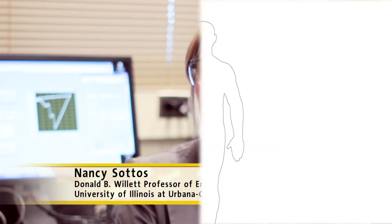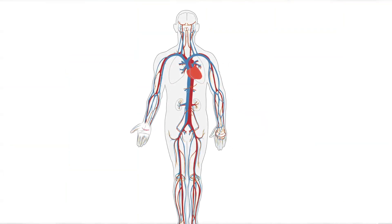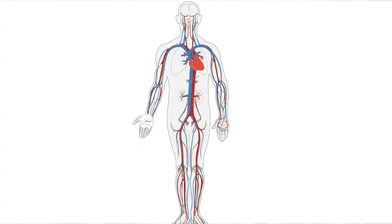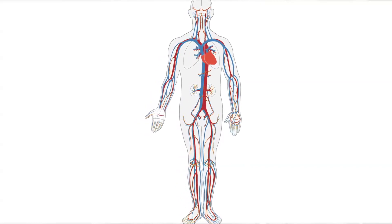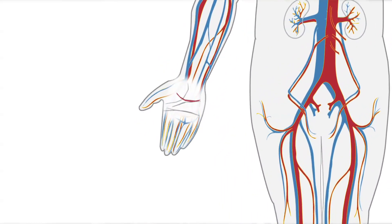So self-healing materials are inspired by the human body. You know that if you get a cut, what happens right away is that you've got a circulatory network. The first thing that happens is a quick response. It brings the necessary clotting agents and you form a clot.